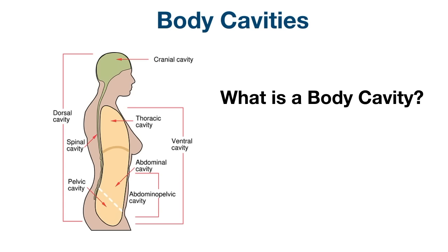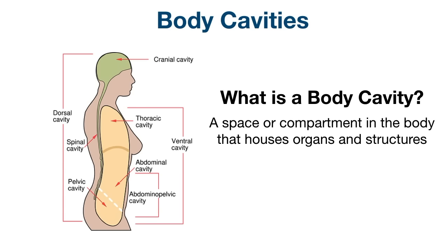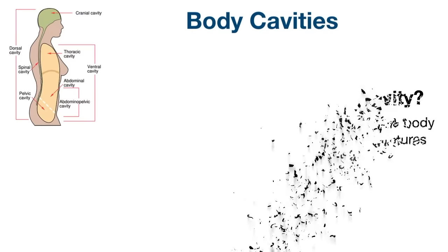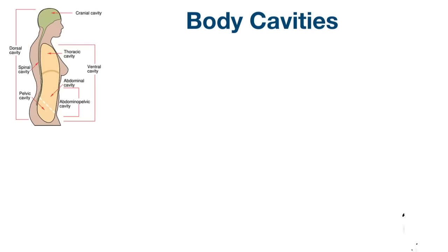First, we have to ask ourselves: what is a body cavity? A body cavity is a space or compartment in the body that houses organs or structures. In other words, they're the spaces left over when internal organs are removed. We're going to make body cavities simple to understand by making a flow chart.